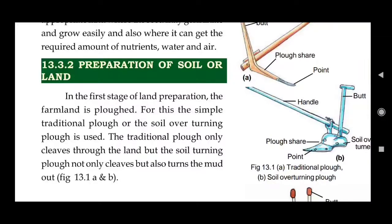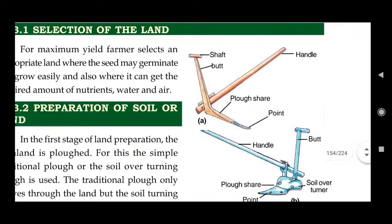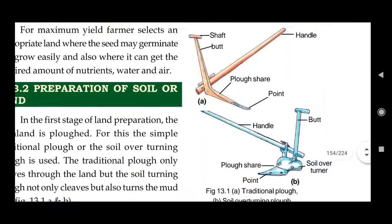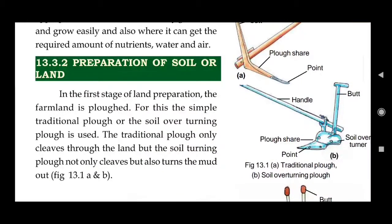For ploughing, the simple traditional plough or the soil-overturning plough is used. You can see pictures of these instruments here — these are used for ploughing the soil. The traditional plough only cleaves through the land, but the soil-turning plough not only cleaves but also turns the mud out from the middle of the soil.